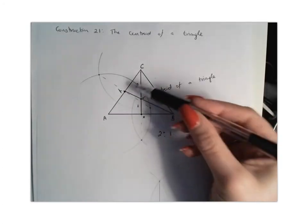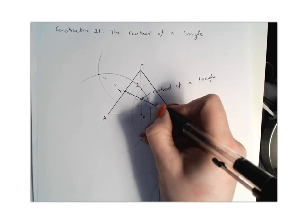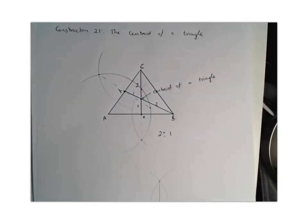And then if we look at this median line, the line BY, again, it's in the ratio 2 is to 1. So that's an important fact that you need to know about the centroid of a triangle.